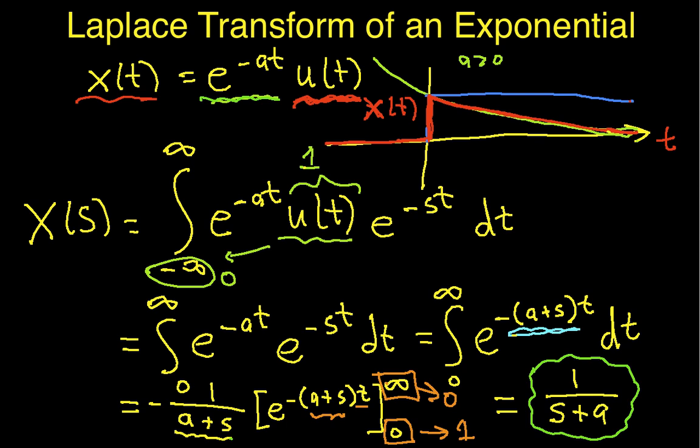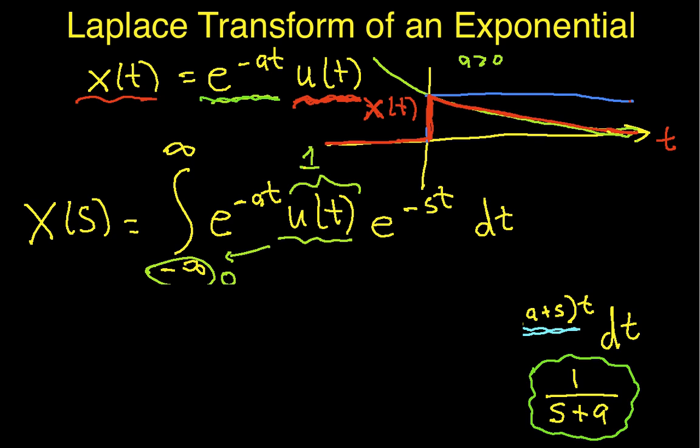Now, we haven't talked yet about the region of convergence, so let's talk for a minute about the region of convergence. I can find the region of convergence by finding where the limit as t approaches infinity of e to the minus (s plus a)t, where this limit is equal to 0. In order for this limit to be 0, I need the real part of (s plus a) to be greater than 0.